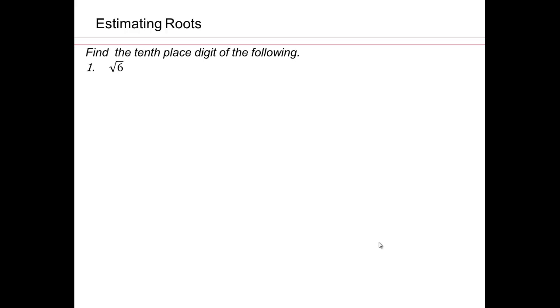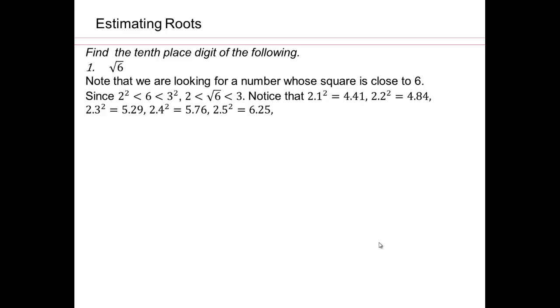So if I say find the tenth place digit of square root 6, this is what you can do. Remember what we're looking for. Square root means you're looking for something squared is 6. So for estimating, we want to know something squared as close to 6 as we can get. So you know that 2 squared is 4, 3 squared is 9.